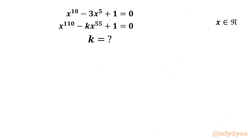Welcome back to InfiGyaan friends. In today's video we have one very interesting question from algebraic equations. Two equations are known: x power 10 minus 3 times x power 5 plus 1 equal to 0, and x power 110 minus k times x power 55 plus 1 equal to 0. x belongs to real numbers, and we have to find out k.